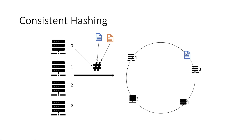Similarly, the orange document's ID is passed through the hash function, generating a value represented by another point on the circle. Moving clockwise, the orange document is stored on server 3. Now imagine server 0 goes down — the blue document will be assigned to server 1. Notice that we did not have to redistribute all of the data across all servers. Only server 0's data is reassigned to the next server, which is server 1. We are not touching any other data on any other server. This is the advantage of consistent hashing: whenever any server is added or removed, only that single server's data is moved.